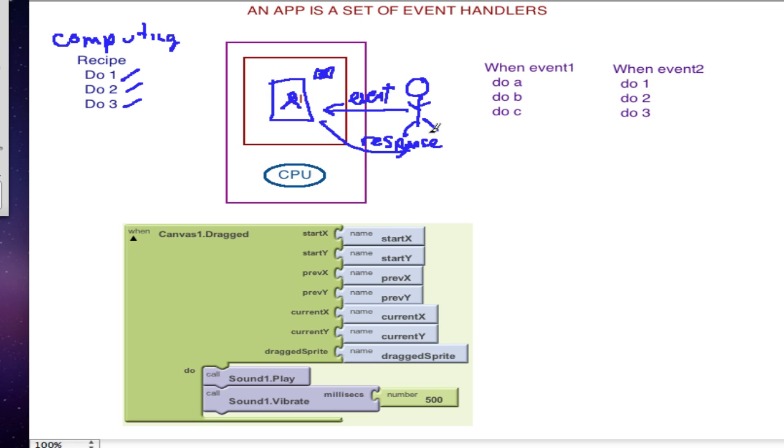So in the Hello Purr app, we've got an event which was canvas.dragged. The user dragging and the response was, in fact, two operations: play a sound and vibrate. So that was our response.